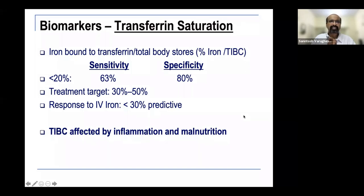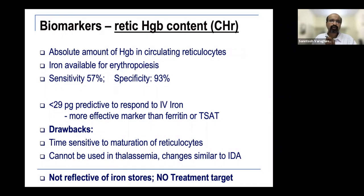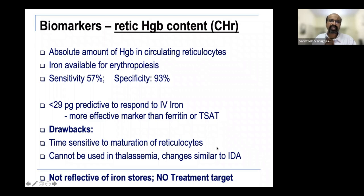The reticulocyte hemoglobin content — the absolute amount of hemoglobin in circulating reticulocytes available for erythropoiesis — has very high specificity (93%) but low sensitivity. A low value is predictive of response to IV iron and is considered more effective than ferritin or T-sat. However, it is time-sensitive (affected by reticulocyte maturation), cannot be used in thalassemia, does not reflect iron stores, and there is no defined treatment target.